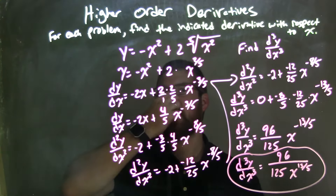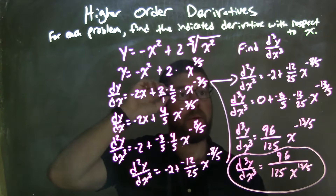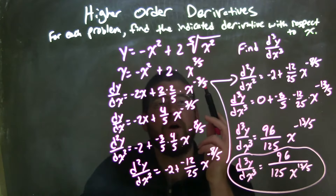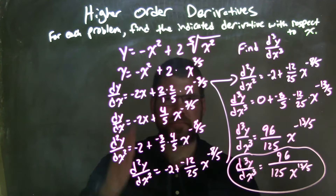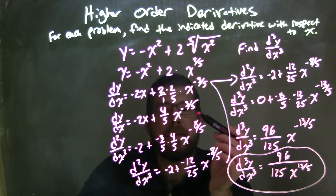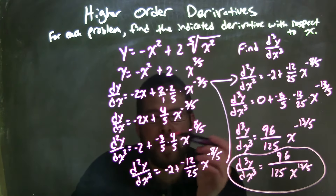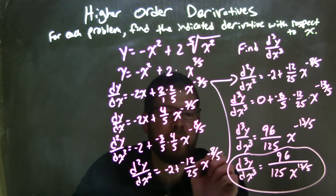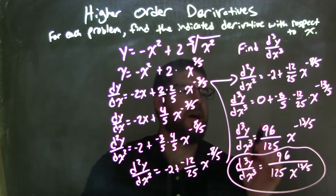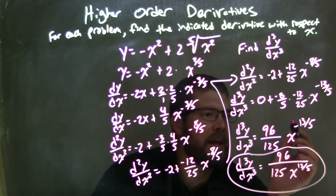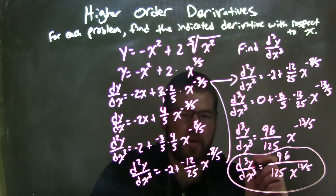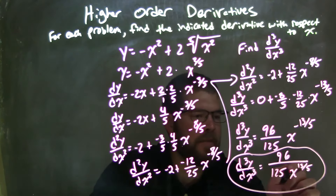Let's recap. We were given y equals negative x squared plus 2 times the fifth root of x squared, and we wanted to find the third derivative. I rewrote the radical as a fractional exponent — the fifth root of x squared becomes x to the two-fifths power. I applied the power rule to get the first derivative: negative 2x plus four-fifths x to the negative three-fifths. Then the second derivative: negative 2 plus negative 12 over 25 x to the negative eight-fifths. Finally, the third derivative gives 96 over 125 x to the negative thirteen-fifths, rewritten as 96 over 125x to the positive thirteen-fifths.